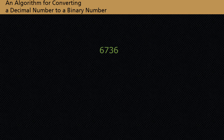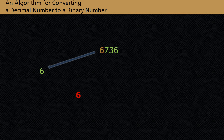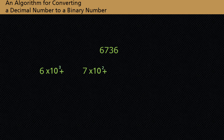We can write the decimal number 6736 in expanded form. Notice that the leftmost 6 represents six thousandths, and the rightmost 6 represents six ones. Since we multiply each digit by a power of 10, we often call the decimal system a base 10 number system.